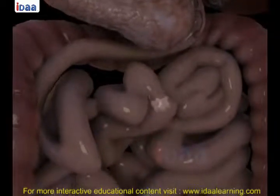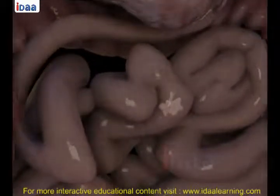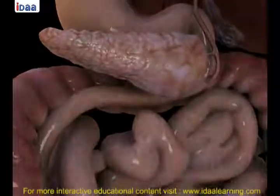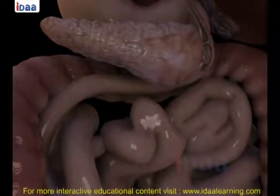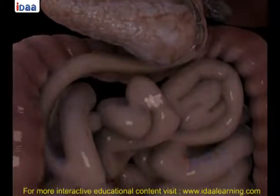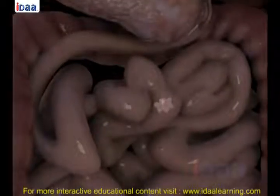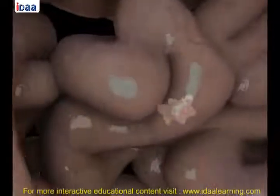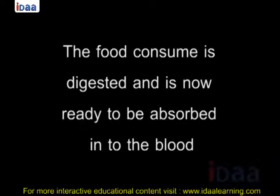The carbohydrates in the food break down into sugars like glucose, fats into fatty acids and glycerol, and proteins into amino acids. The food consumed is digested and is now ready to be absorbed into the blood.